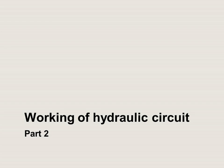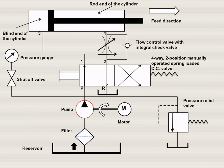In this video we will try to understand how the basic hydraulic circuit works, and we have taken the example of a meter out circuit. These are the various components: there is a reservoir, from which liquid enters into the filter, then into the pump which is driven by an electric motor. There is a shut off valve and pressure gauge which indicates the pressure within the circuit, then a pressure relief valve which takes care of excess pressure and restores the system back to the design pressure.